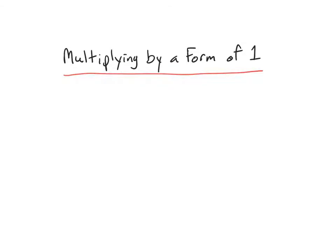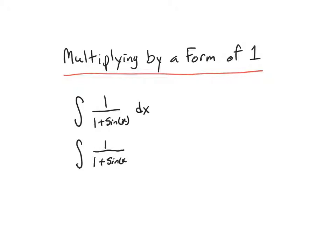Here's a brief discussion of the solution to number 57 from our examples today. We're going to use a technique of multiplying by a form of 1 to evaluate an indefinite integral. The integral in question is 1 over 1 plus sine of x. The trick for problems like this is to multiply by a form of 1 that we construct using the conjugate of the denominator.